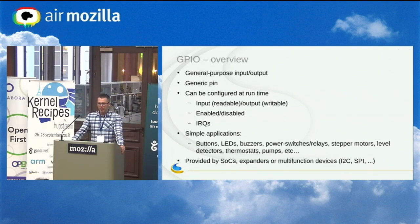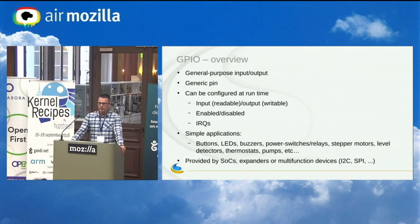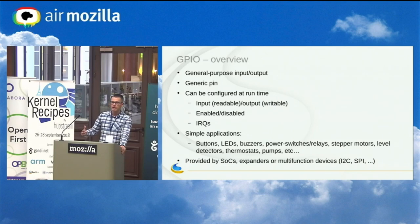My talk today is about a relatively trivial subsystem in the Linux kernel — GPIO — and specifically about using GPIOs from user space. GPIO stands for General Purpose Input Output. It's basically a pin that you can program, and it can have two values: high or low, or 1 or 0. It can be programmed to be in input mode, where someone else is driving the pin and you just read its value, or in output mode, where you are the one driving the pin and someone else reads its value.